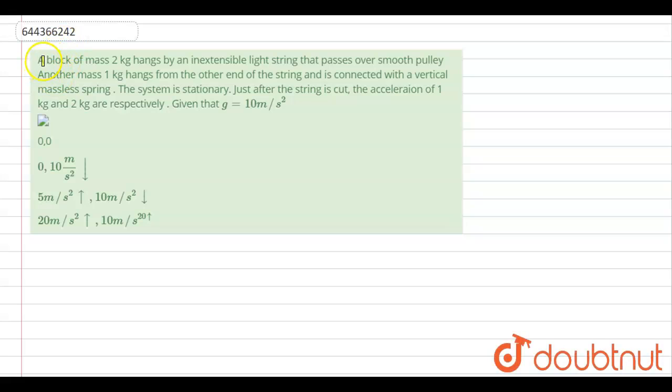Hello, here the question is: a block of mass 2 kg hangs by an extensible light string that passes over smoothly. Another mass 1 kg hangs from the other end of the string and is connected with a vertical massless spring. The system is stationary, just before the string is cut, find the acceleration of 1 kg and 2 kg respectively, given that g is 10 meter per second squared.